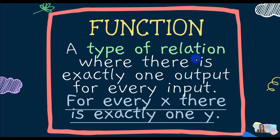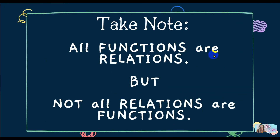So a function is a relation. But for a relation to be qualified as a function, we need to remember that for every x, there is exactly one y — the elements of x have exactly one pair in y. Another thing to note: all functions are relations, but not all relations are functions, because there is a qualification to become a function.